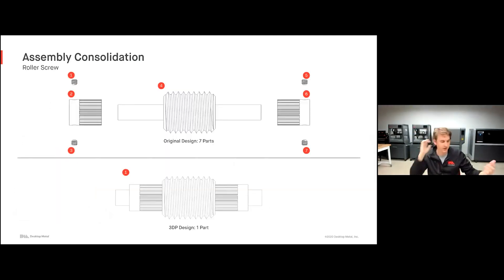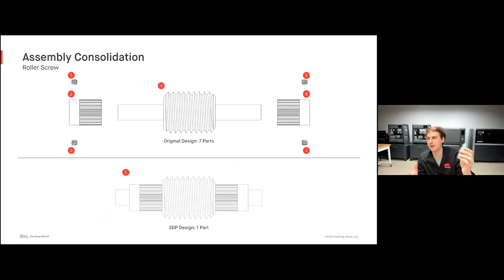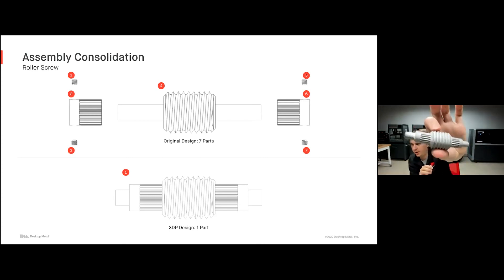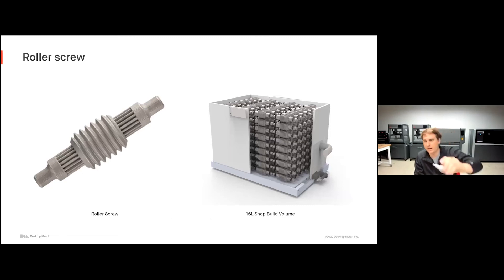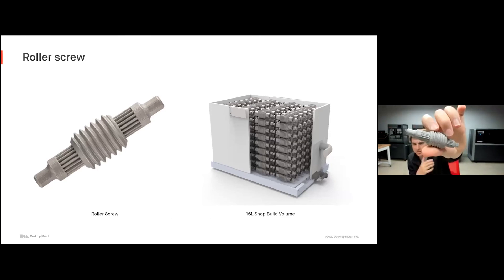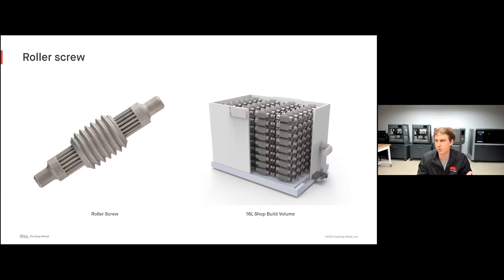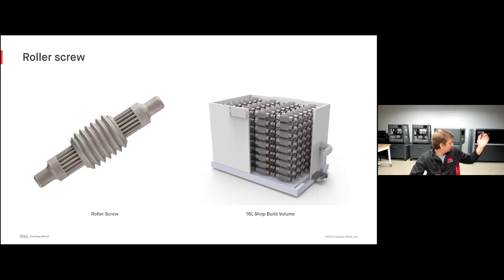Another great example is assembly consolidation. So many parts today are designed for their manufacturing method more so than for their application. For example, this roller screw traditionally is designed as seven different components just because it's easier to make those seven parts individually than to consolidate them into one assembly. With 3D printing, we can consolidate all those parts into one geometry — and it's not just printing one of these. We can print hundreds of these parts per day, thousands per week or year, actually going to market with highly optimized consolidated assemblies, reducing our bill of materials, making inventory far easier to manage, and leading to a higher performance part.